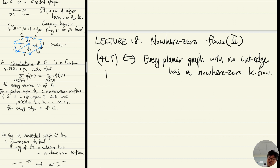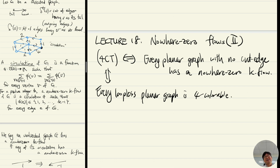Why? Because the four color theorem says every loopless planar graph is four-colorable. Why do we remove loops? Because if a graph has a loop, a vertex is adjacent to itself, so you can never make a coloring such that adjacent vertices have distinct colors. And when you take a geometric dual, loops become cut edges and cut edges become loops.